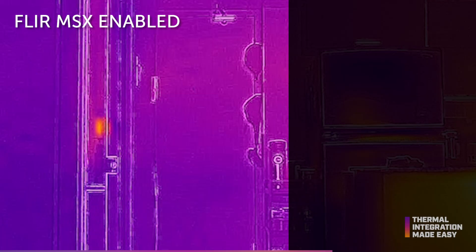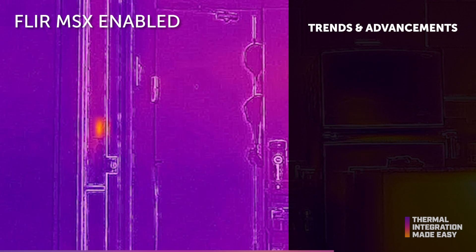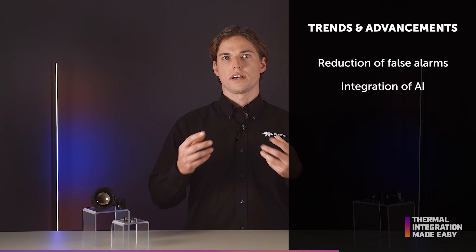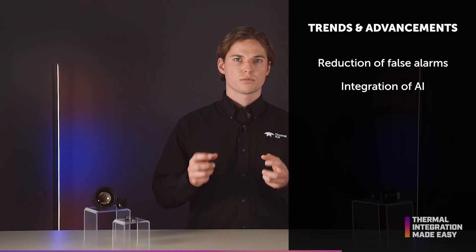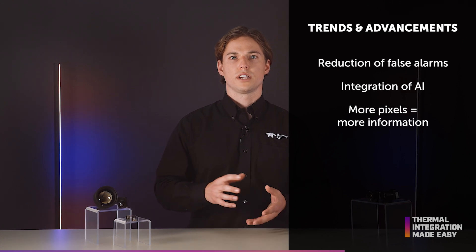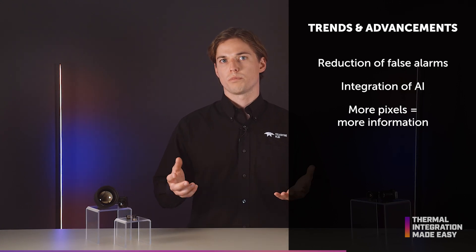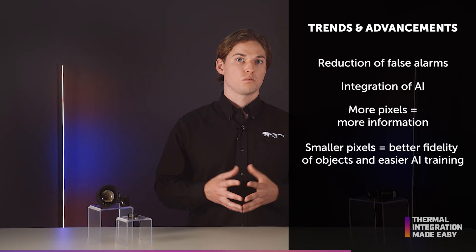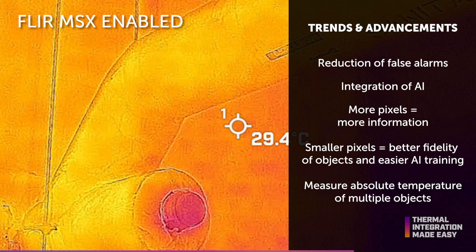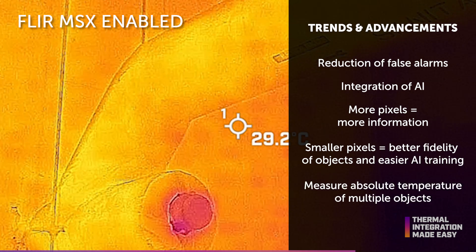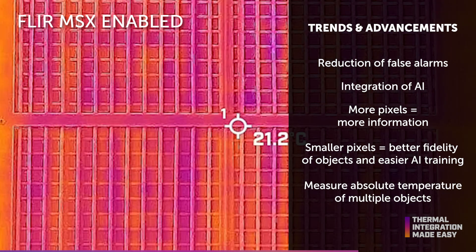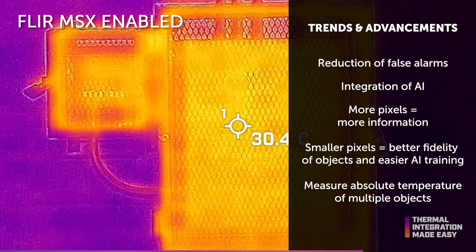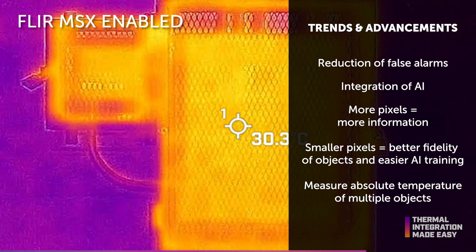Today, current use case trends are focusing on the reduction of false alarms, integration of AI, and overall smarter systems. More information — or more pixels — better fidelity of objects, smaller pixels, and the ability to measure absolute temperature of multiple objects in the same scene is resulting in the blurring definition of what is a sensor versus an imager.